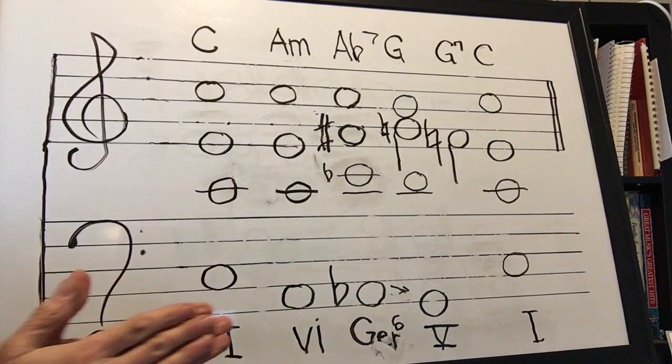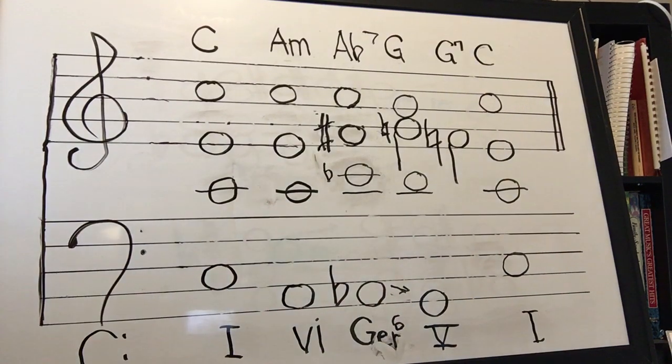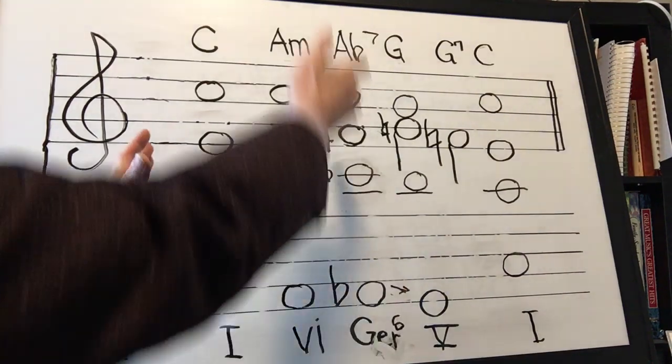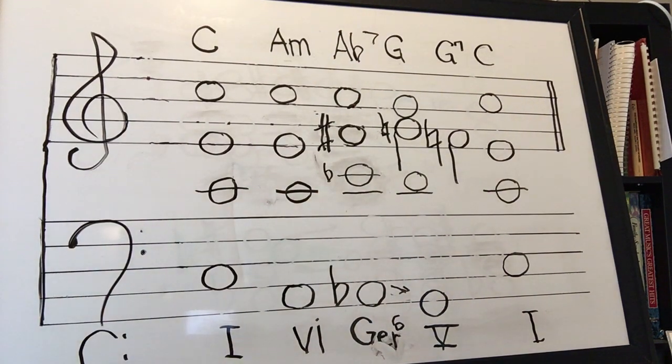So the homework assignment, the worksheet assignment, is first of all for you to write in the note that is an Augmented Sixth above several bass notes. And then a fairly straightforward analysis for you to do. There shouldn't be any surprise anywhere except in that Augmented Sixth Chord.